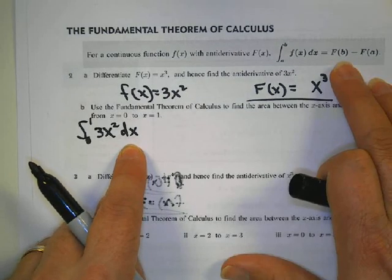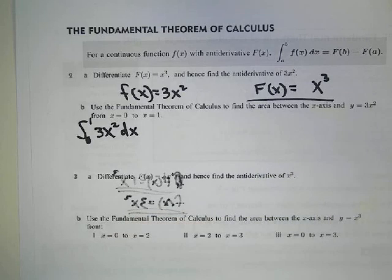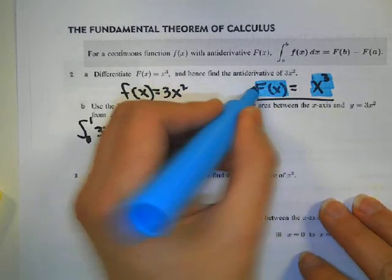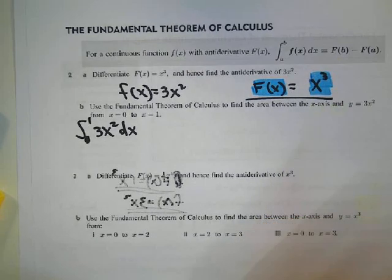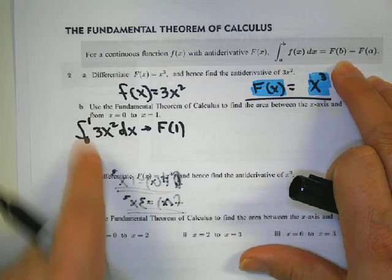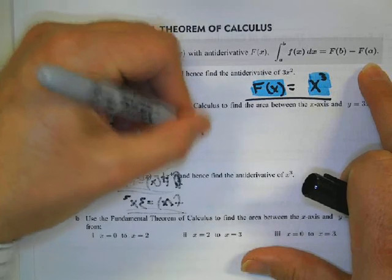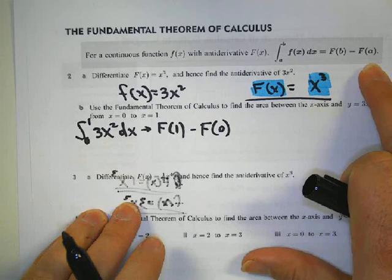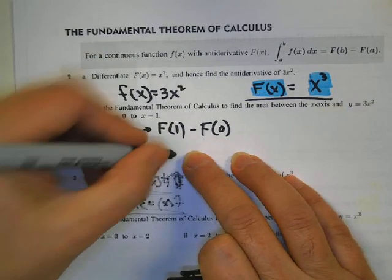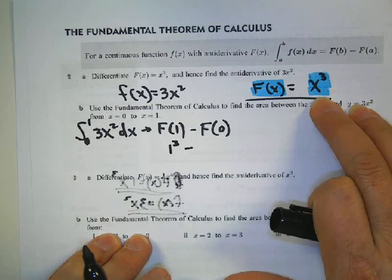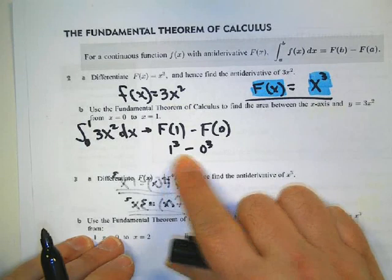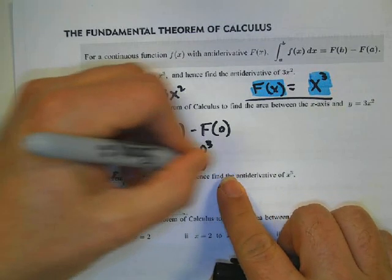We know the antiderivative is x cubed. Using this relationship, this is going to equal the antiderivative evaluated at 1 — because that's our upper bound — minus the antiderivative evaluated at 0. The antiderivative is x cubed. Plugging in 1: 1 cubed. Plugging in 0: 0 cubed. We end up with 1 cubed minus 0 cubed, giving an area of 1.